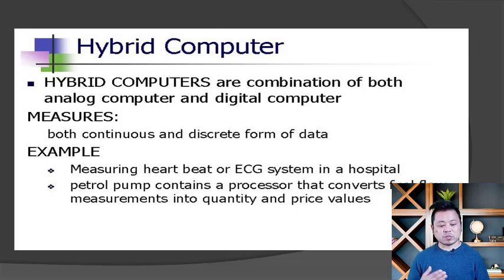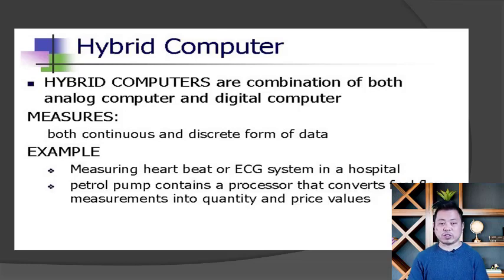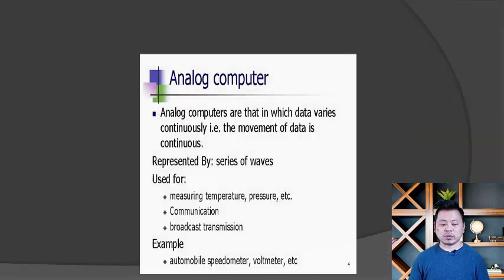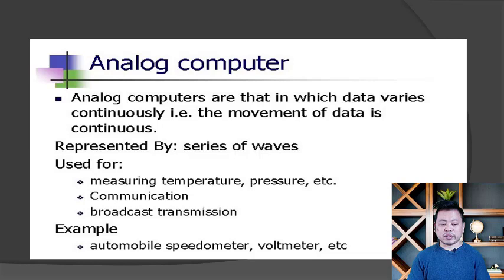The petrol pump contains a processor that converts the fuel flow measurement into quantity and price value. For example, driving a car or bike and measuring fuel — it is like a measurement meter. These are examples of hybrid computers.